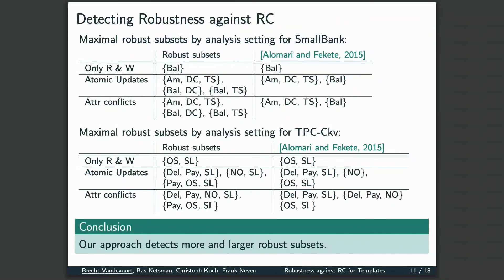We applied our algorithm on both the SmallBank benchmark and a benchmark based on TPCC, and compared it to the earlier sufficient condition by Alomari and Ficchietti. The different rows represent different settings considered for each benchmark, where each setting included more and more features such as atomic updates and conflict analysis on the level of attributes. The column on the left presents the subsets detected by our algorithm, whereas the column on the right presents those detected by the sufficient condition. The general conclusion is that adding features results in larger robust subsets, and our approach detects more and larger robust subsets compared to the earlier sufficient condition.